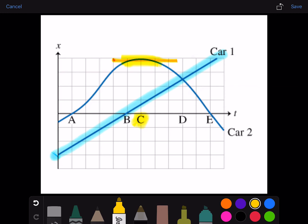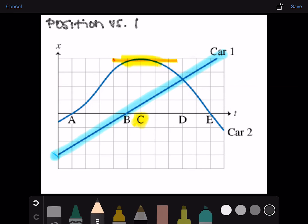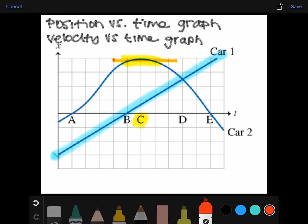At which of the letter times are the cars moving with nearly identical velocities? The velocity versus time graph is the derivative of each of these lines. So to see the velocity and to compare the velocities, you look at the slope of the position graph. The only time that the slopes are nearly identical is at time A.